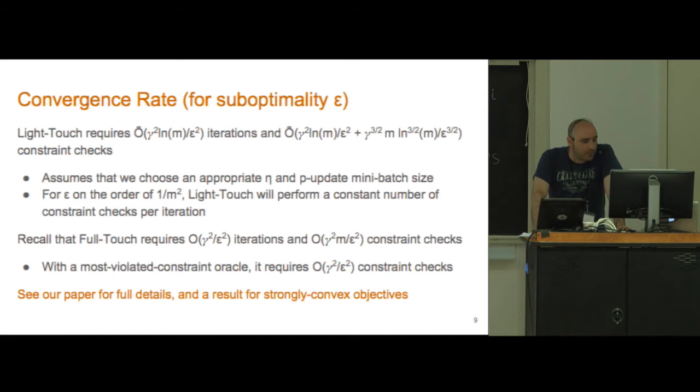If we do this we wind up with an algorithm that converges in gamma squared log m over epsilon squared iterations. So it converges in log m times more iterations than the original full-touch algorithm, however it checks fewer constraints. In fact if epsilon is on the order of one over m squared, then light-touch will perform a constant number of constraint checks at each iteration.